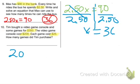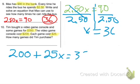But then he's going to buy some games for $25 each. Do we know how many games? No. So we put our variable, and he spent a total of $350.